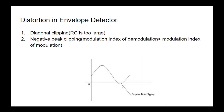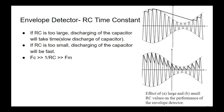Let's look at the types of distortion in the envelope detector. In books you will find two types: diagonal clipping and negative peak clipping. However, there are actually three types — two based on RC value which we already discussed. The books mention diagonal clipping for the case when the RC value is too large, whose explanation is given in the last slide. When RC is too large we do not get the actual envelope but get clipping of the envelope.